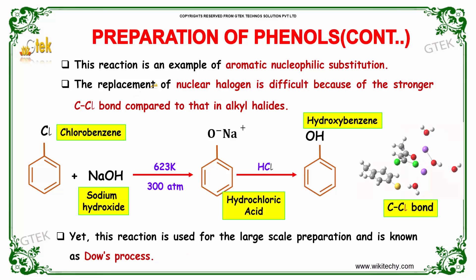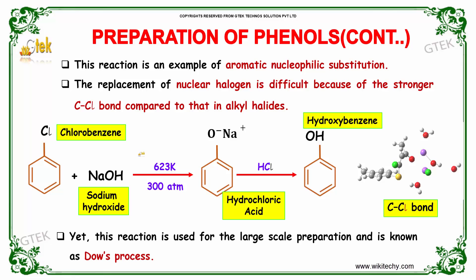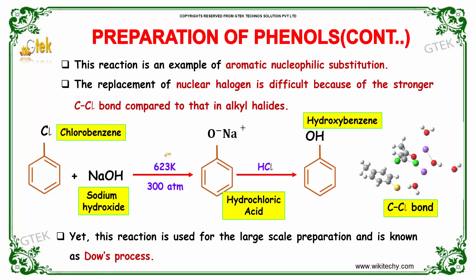This reaction is an example of aromatic nucleophilic substitution. The replacement of the nuclear halogen is difficult because of the strong C–Cl bond compared to that in alkyl halides. Since OH cannot directly replace the chlorine ion at 623 Kelvin and 300 atmospheric pressure, ONa replaces the Cl, and it forms O⁻ and Na⁺.